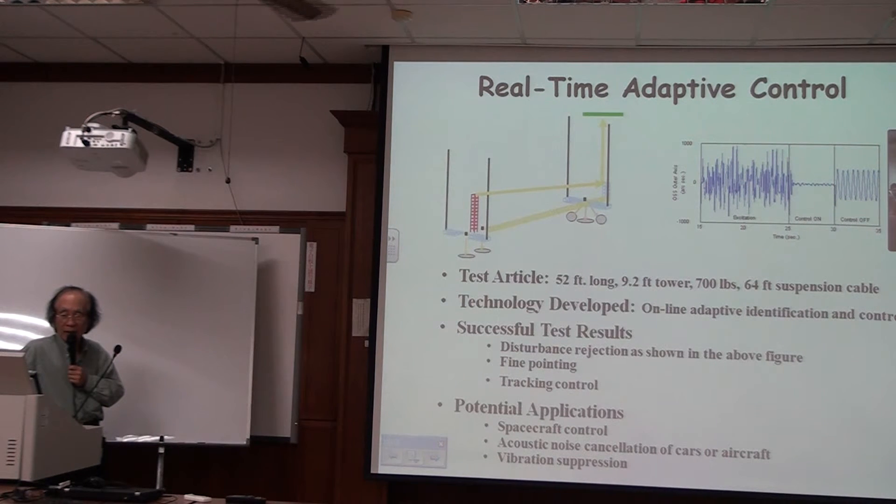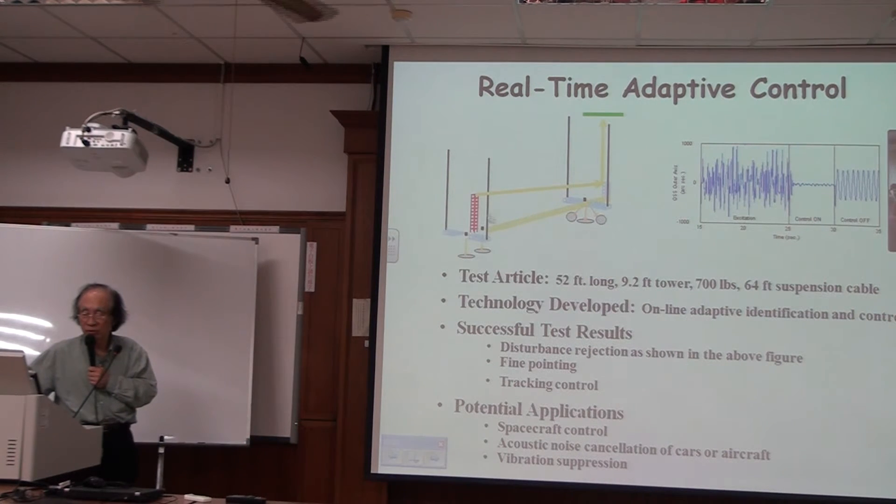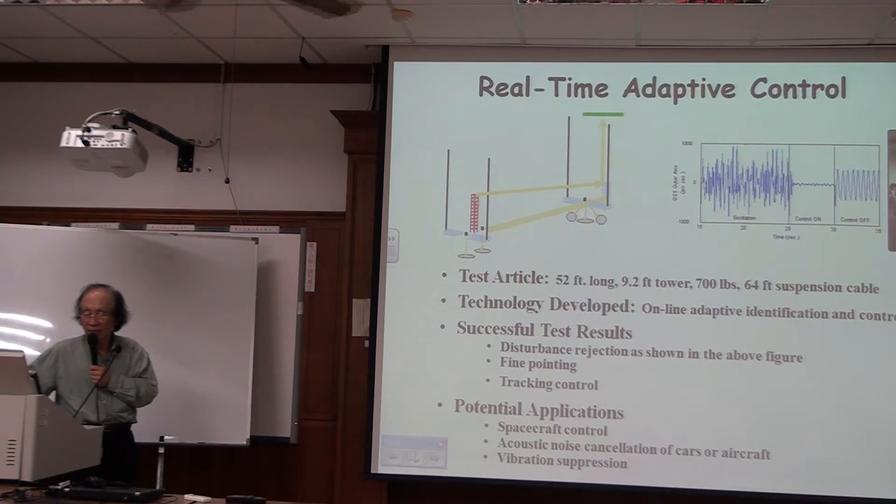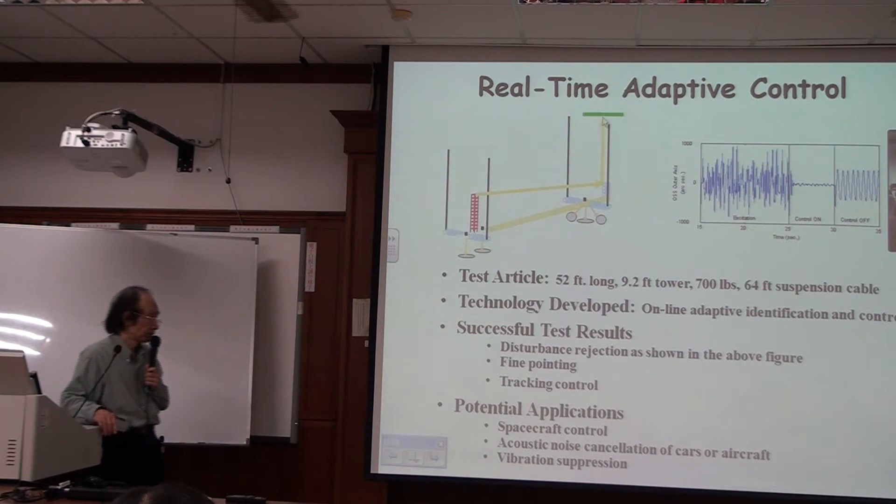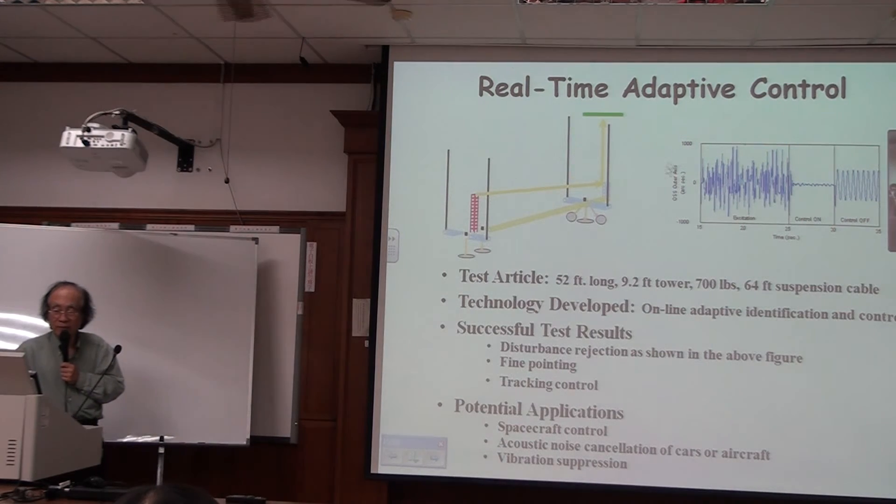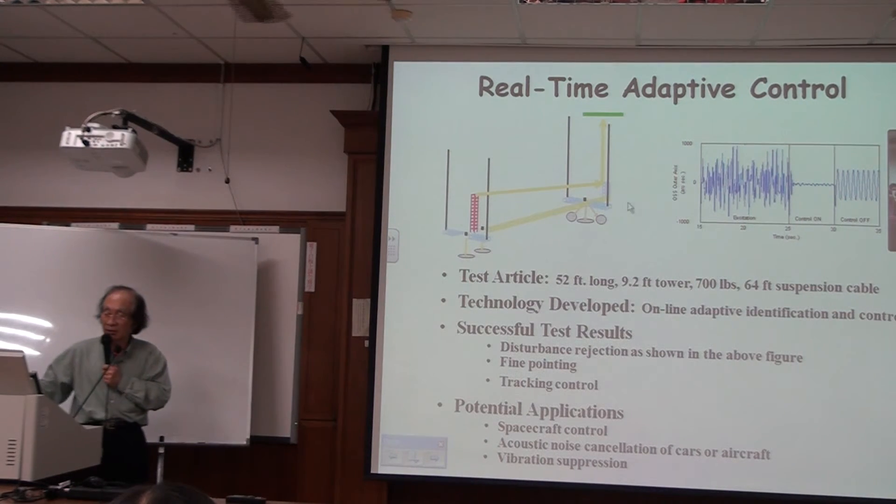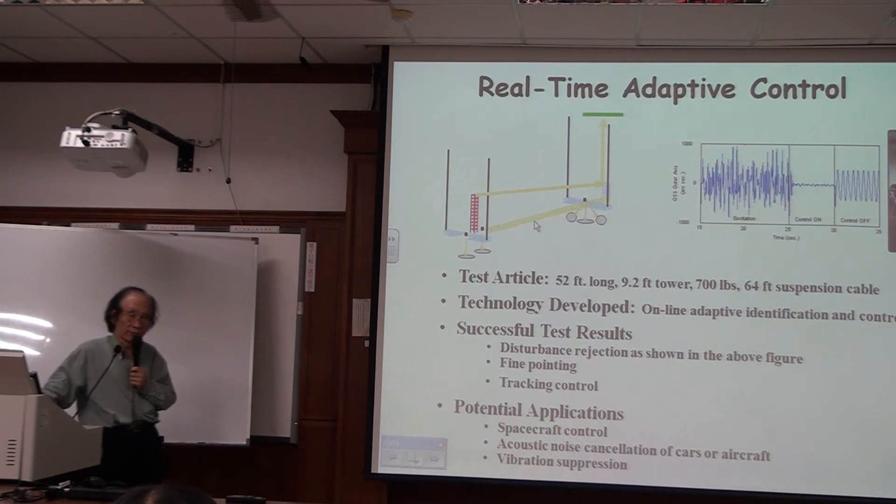Now because the structure itself is a flexible structure, so that when you have a laser started from this point and then reflect from this point to the top target, then it won't be very precise. And this antenna is a 50 meter diameter antenna, and this structure itself is about 55 feet long and 22 feet long and 9.2 feet tall and 700 pounds.